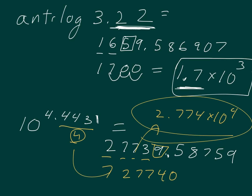You can see the logic behind the sig fig rule. Where does that 4 in the exponent wind up? It winds up right there when we put the number in scientific notation. Where does the 3 from the decimal part wind up? It winds up on the 10 in scientific notation. That's why we don't count the numbers to the left of the decimal as significant when we're taking anti-logs.